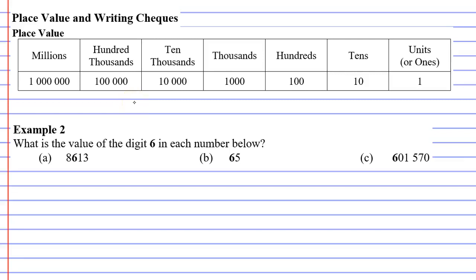So in this video, we're going to look at place value using this table, and we're going to go straight into the example which says, what is the value of the digit 6 in each number below?